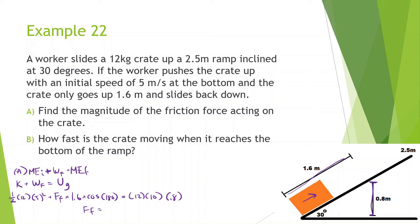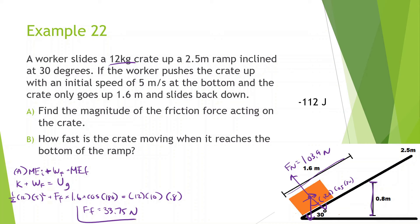Now let's figure out the force of friction. 5 squared times 12 times 0.5, minus 12 times 10 times 0.8, divided by 1.6. We find that the force of friction is equal to 33.75 newtons.